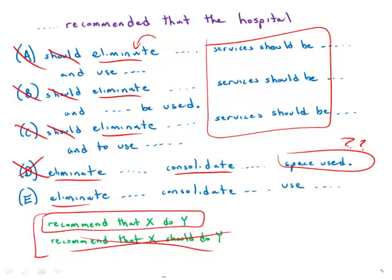So we've eliminated A through D. We hope that E is going to work for us here. And sure enough, eliminate, consolidate, use. Three direct parallel verbs. Answer choice E is free of grammatical error. It is direct and efficient and sleek. It is a wonderful answer choice, the strongest of those here.